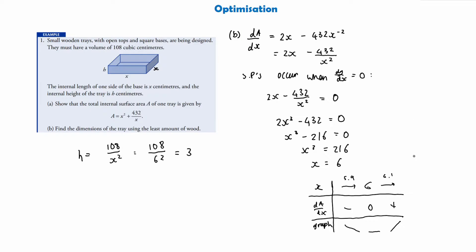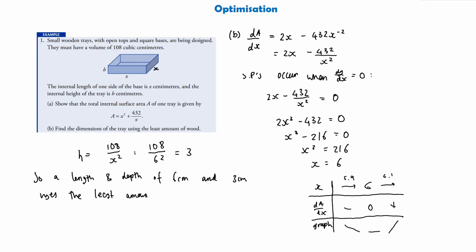Since we have a minimum, x = 6 is the correct value, giving dimensions of length and depth 6 centimetres and height 3 centimetres, which uses the least amount of wood. That concludes the first question on optimization. As you can see, if we were given the formula directly and went straight to part b, we could complete it with just stationary point work. Part a is about deriving the formula, and in some cases part b might actually help you work out part a.